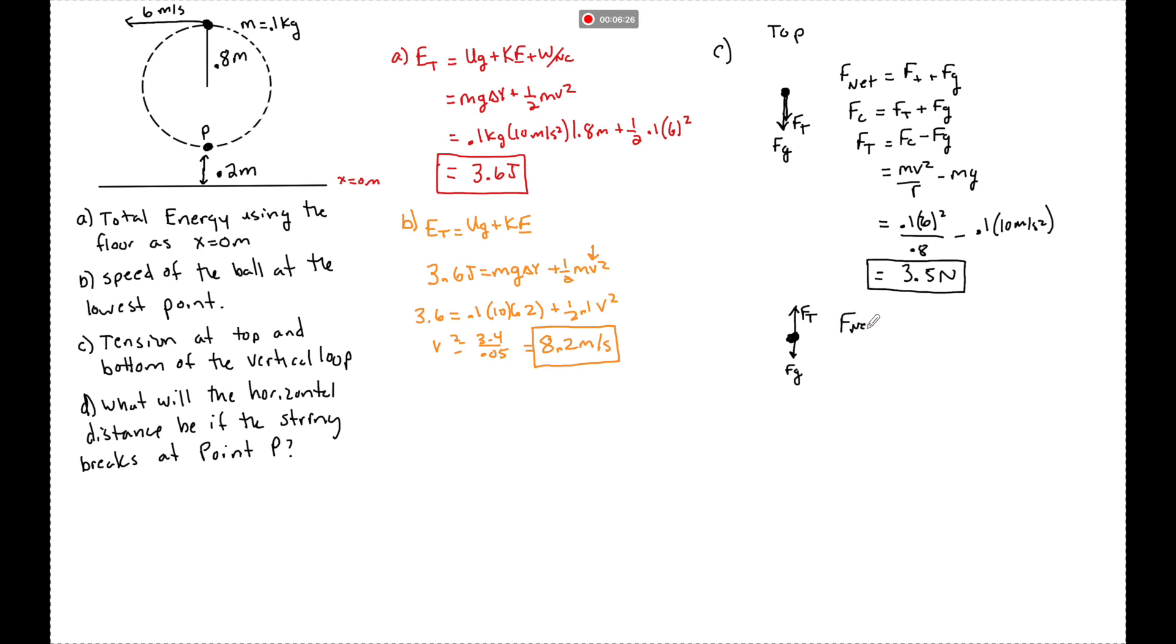So we see Fnet now equals Ft. I call towards the center of the circle positive always, minus Fg. Fancy word for Fnet, an object moving in a circle is Fc. Ft is equal to Ft minus Fg. So Ft now is going to be equal to Fc plus Fg.